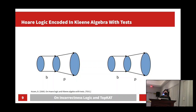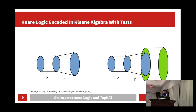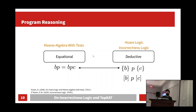Kozen noticed that Kleene algebra with tests can indeed encode Hoare logic. The encoding is as follows: if we start with a filter B and run program P on it, then applying a further filter by C has no effect because the postcondition C already contains all the possible outputs of B after P. This equivalence — BP equals BPC — exactly corresponds to the validity of the Hoare logic triple BPC. Kozen also showed that the equational theory of Kleene algebra with tests subsumes all the proof rules of Hoare logic.